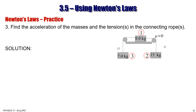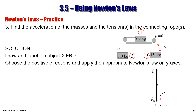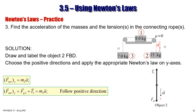For object 2, which accelerates downward, that is the positive direction. Draw the free body diagram — do not draw a normal force since object 2 is hanging from the rope. On the y-axis only, apply the second Newton's law: Fnet y equals M2a. Following the positive direction, Fg2 is positive and T1 is negative, so Fg2 minus T1 equals M2a. That is equation number 2.